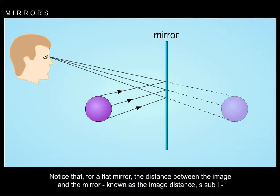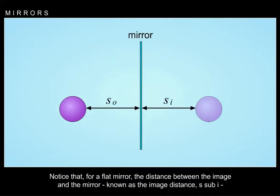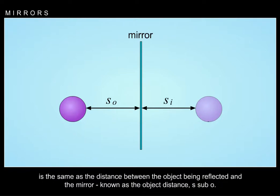Notice that for a flat mirror, the distance between the image and the mirror, known as the image distance S sub i, is the same as the distance between the object being reflected and the mirror, known as the object distance S sub o.